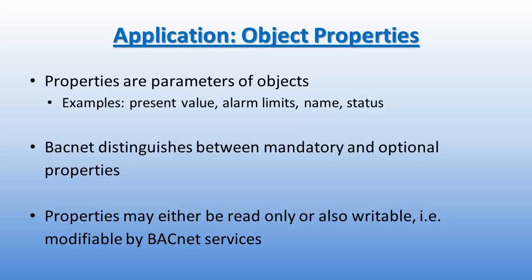BACnet also requires that certain objects support additional properties. The type of object and type of device in which that object resides determines which properties are present. BACnet objects have two classes of properties: mandatory and optional. BACnet distinguishes between the two, and like most other protocols, limits access to some of these properties. Properties may either be read-only or writable, and they are modifiable by BACnet services.